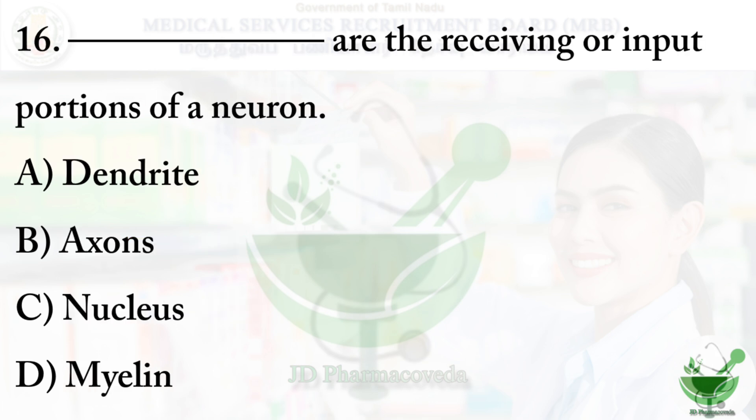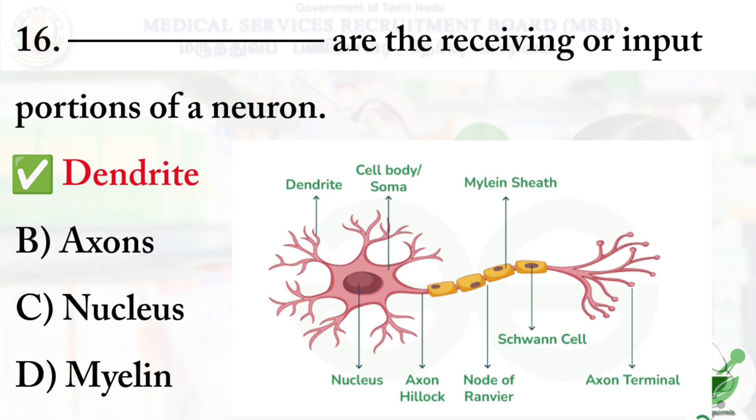Question number 16: These are the receiving or input portions of a neuron. Options are: A) Dendrite, B) Axon, C) Nucleus, D) Myelin. The correct option is A — Dendrite. Dendrites are small projections from the cell body that receive impulses from other cells.